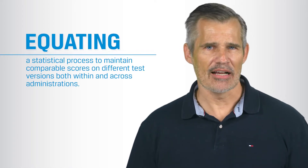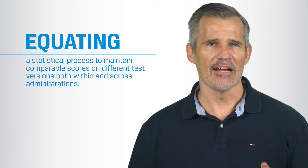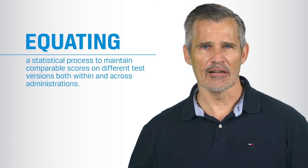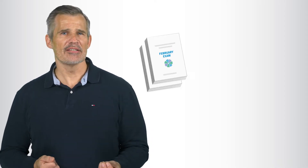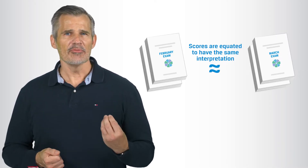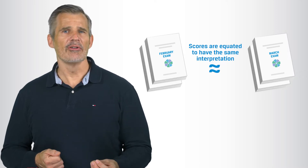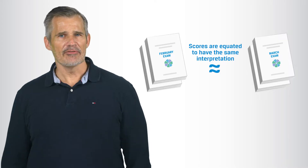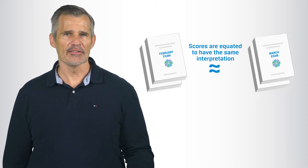Test equating is a statistical process to maintain comparable scores on different test versions, both within and across our administrations. It's analogous to converting degrees Celsius to degrees Fahrenheit by translating the temperature from one scale to another. We do something similar with our minimum passing score — we use equating to apply the approved minimum passing score difficulty level from standard setting to future administrations. The result allows a direct comparison of two or more different exam forms, helping us see where the pass-fail line should be on an apples-to-apples basis, despite slight differences in difficulty level across versions.